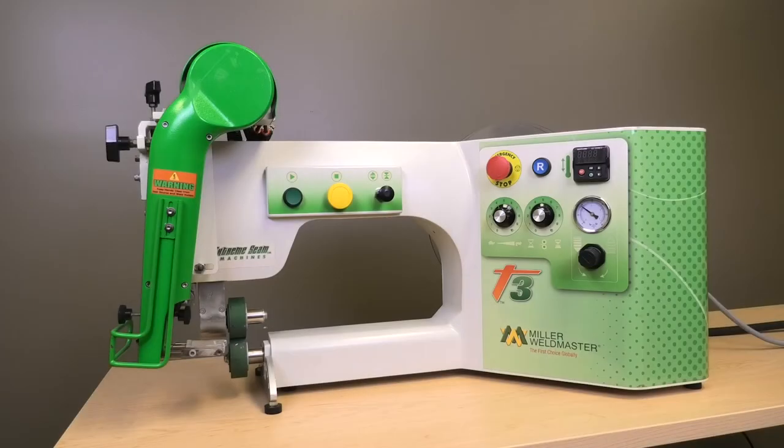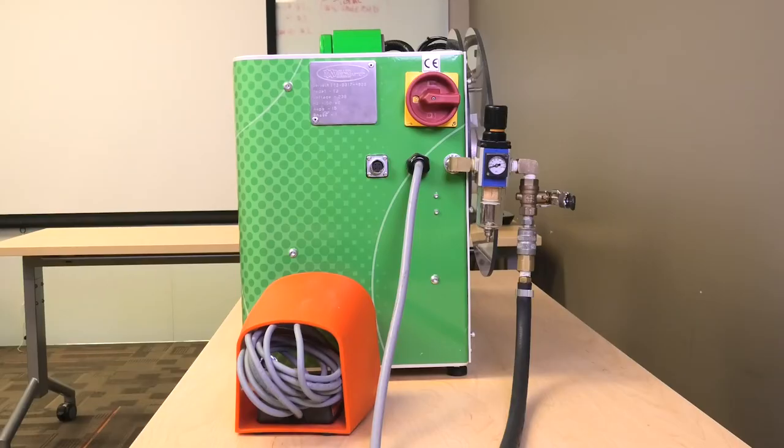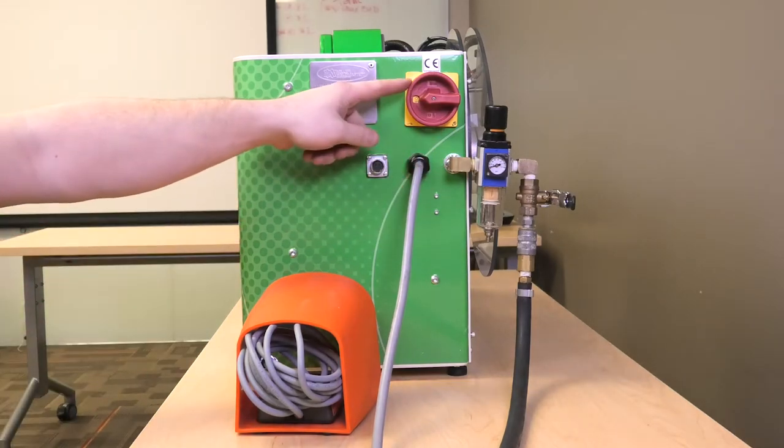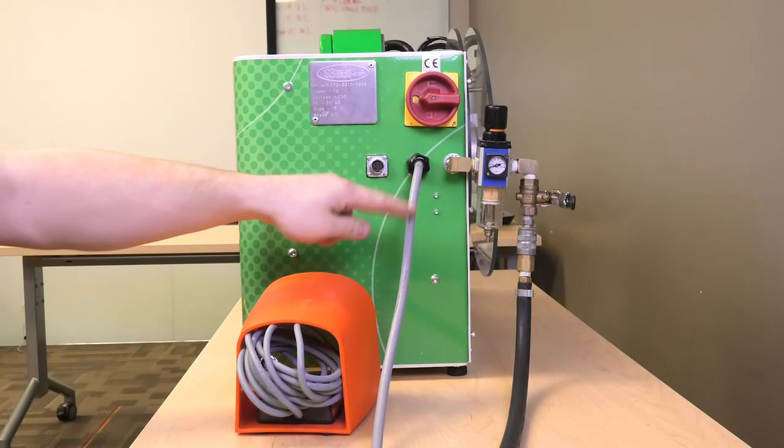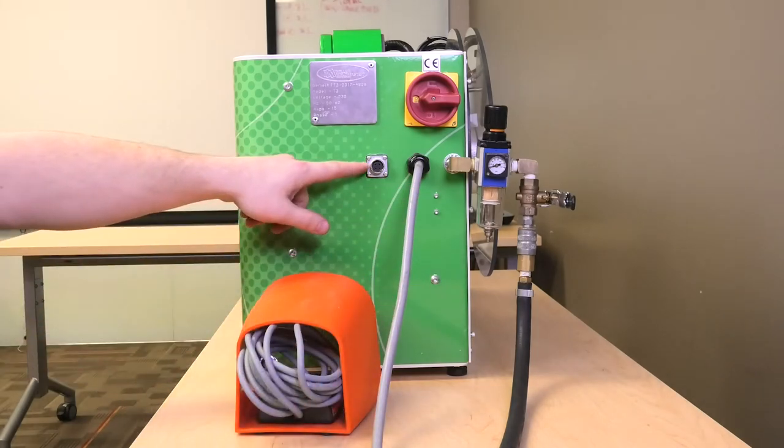Today we are going to go over the installation and training of the T3 Extreme welding machine. When setting up your T3, you're going to want to start in the back of the machine. We have our air regulator, our main power breaker, power cord, and then also our foot pedal.